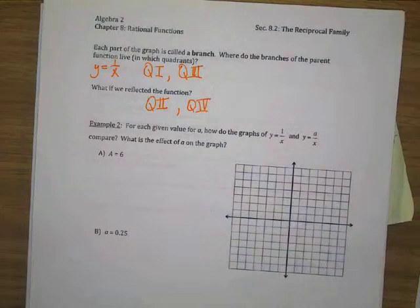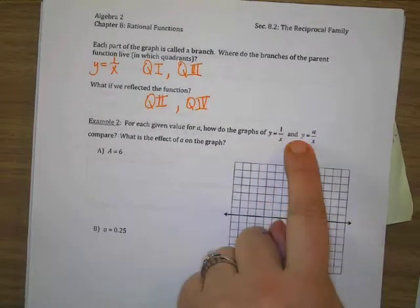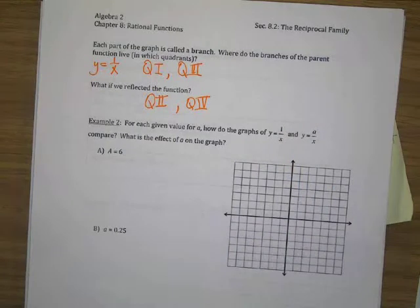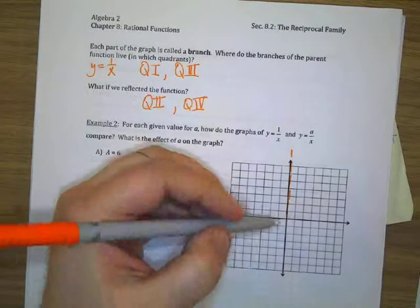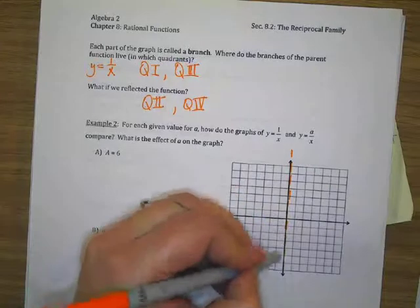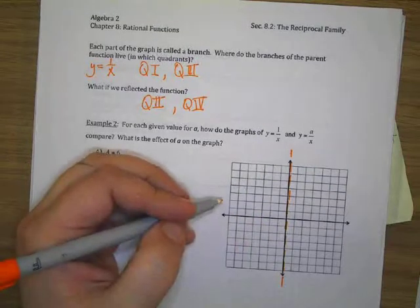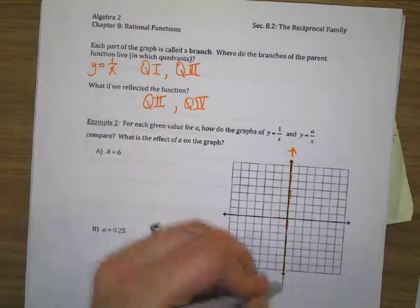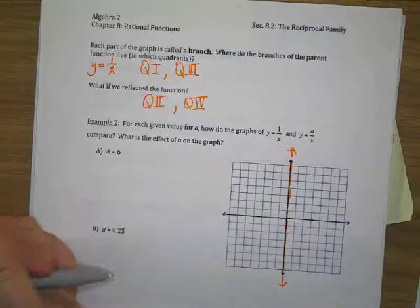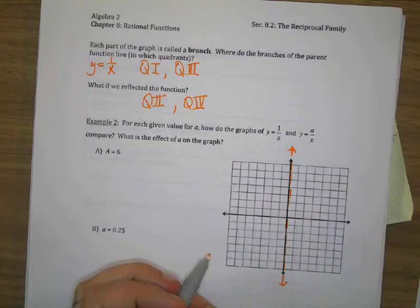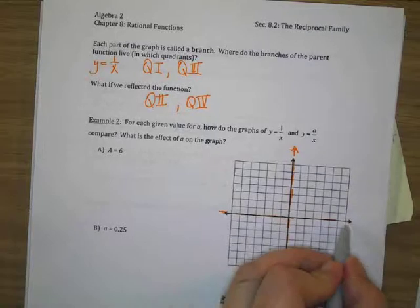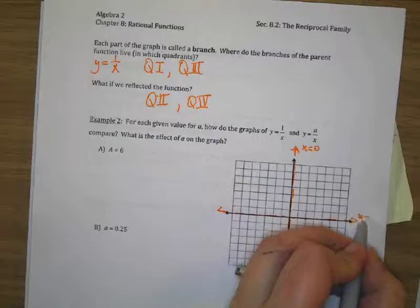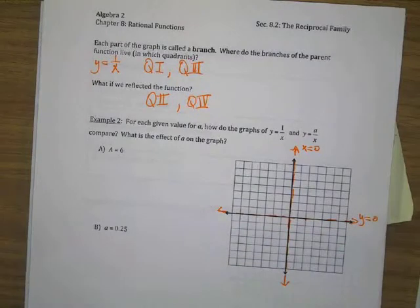It says for each of the given values of a, how do the graphs of y equals 1 over x and y equals a over x compare? What effect does a have on the graph? So let's plot the parent function first. What is x not allowed to be? Zero. So what do we have at x equals zero? Vertical asymptote. Say it with me. Asymptote. No p. Where's my horizontal asymptote? At y equals zero. So I'm going to still have this one here. Those are my asymptotes, x equals zero, y equals zero.